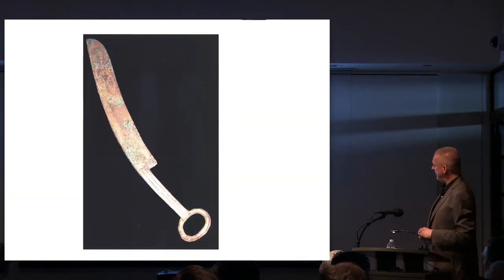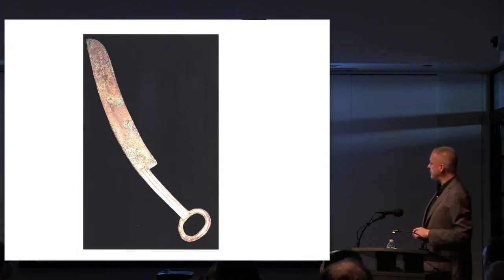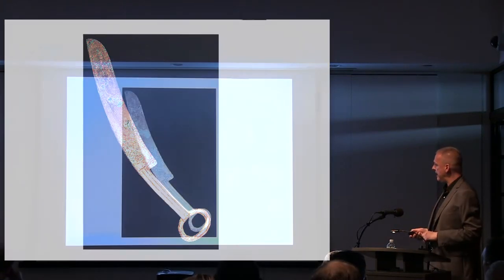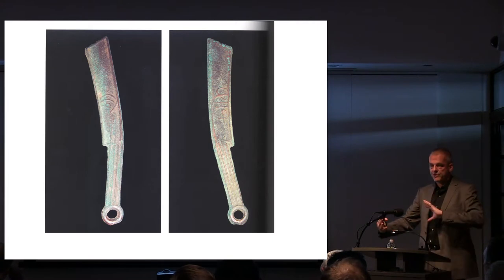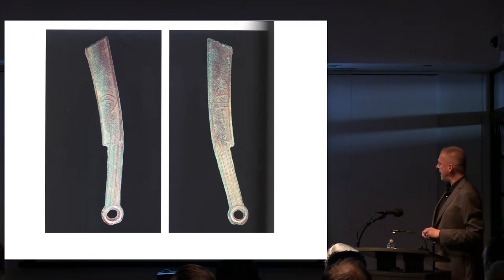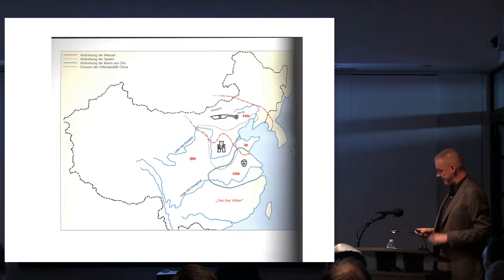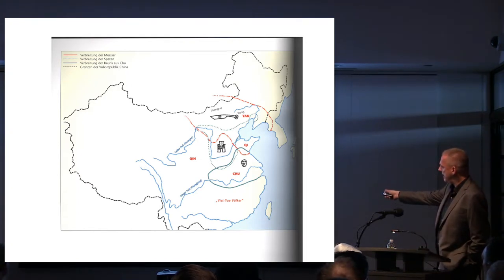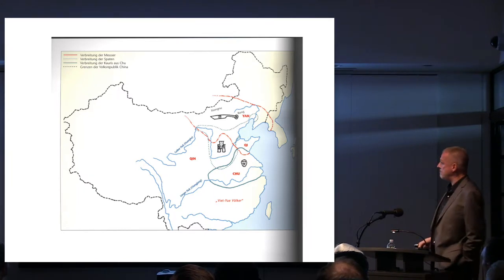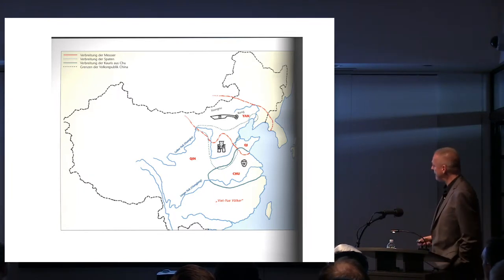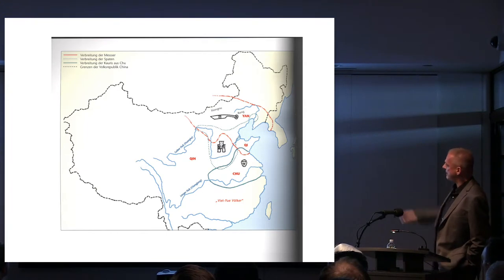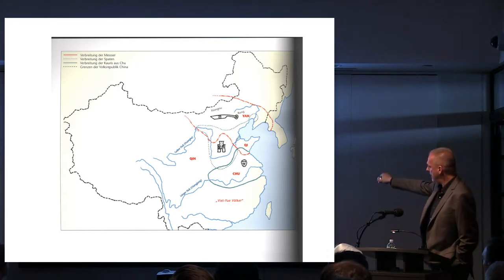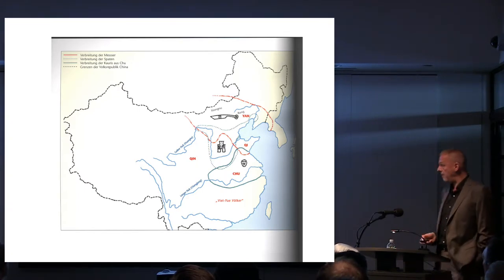The second variety are knife coins, more common in the northern regions of China. They undergo the same evolution — starting large and getting smaller, almost like large razor blades over time — inscribed initially with the cowrie symbol and then the names of the capital cities of the various states. The spade coins come from the central plain region of the lower Yellow River basin, while knife coins are more common in the northern periphery, with a separate zone on the lower Yangtze River.